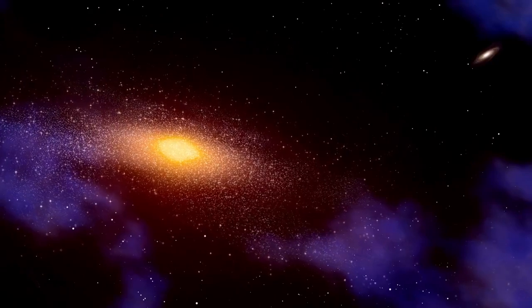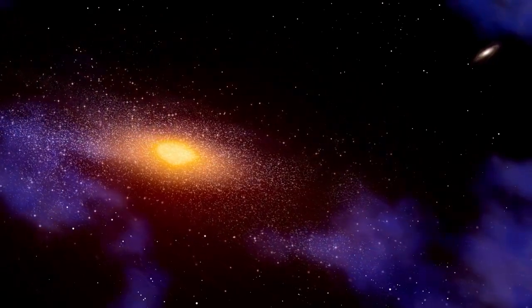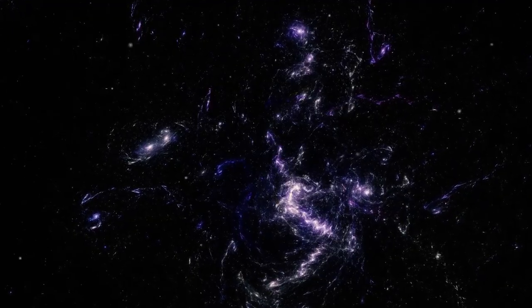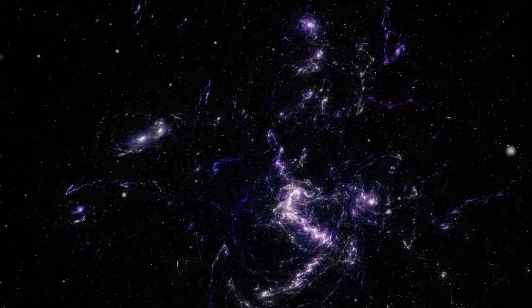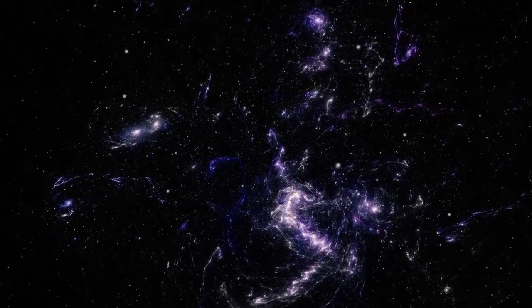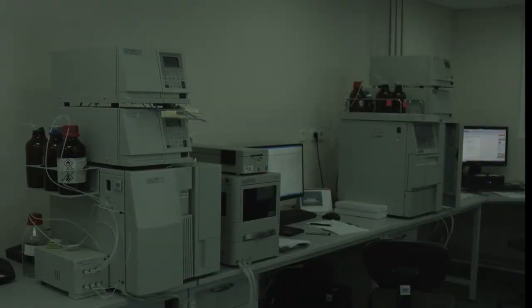For decades, scientists believed they had a clear picture of how the universe evolved. First came the Big Bang, then a Dark Age. Slowly stars began to form, then galaxies, and eventually life. The further back in time we look, the simpler things should appear—just faint hydrogen clouds and scattered particles. That's what everyone expected Webb to find when it gazed at a supposedly quiet, empty stretch of sky.